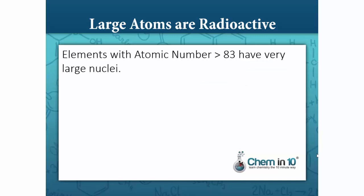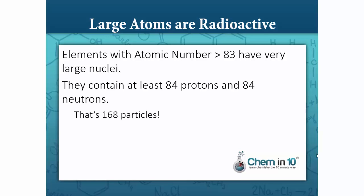Elements with atomic numbers greater than 83, because of their size, are naturally radioactive. The nuclei of these atoms contain at least 84 protons and 84 neutrons. That's 168 particles. They're like a large water balloon.